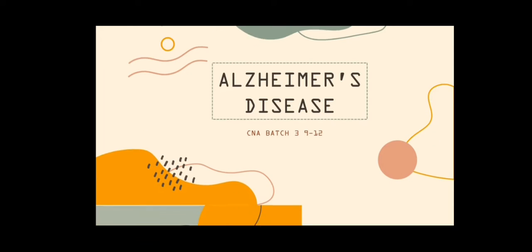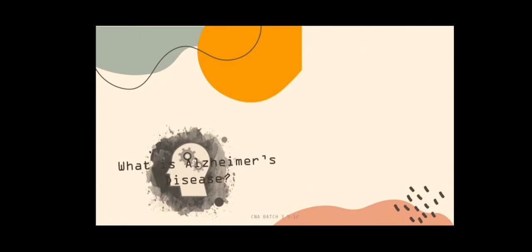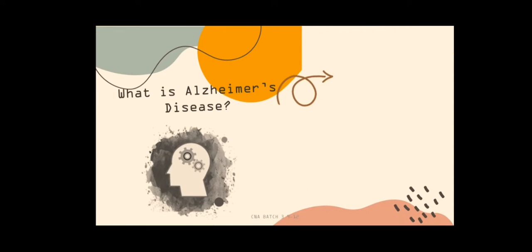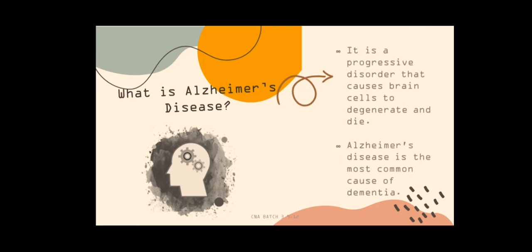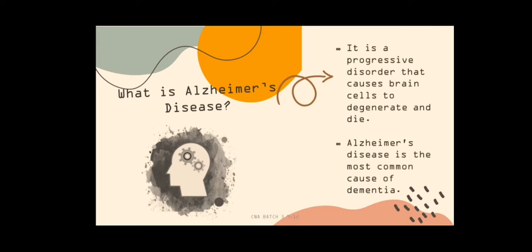Alzheimer's disease. What is Alzheimer's disease? It is a progressive disorder that causes brain cells to degenerate and die. Alzheimer's disease is the most common cause of dementia.